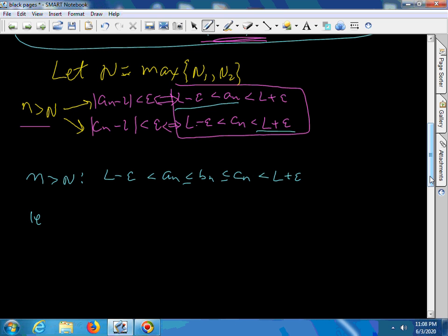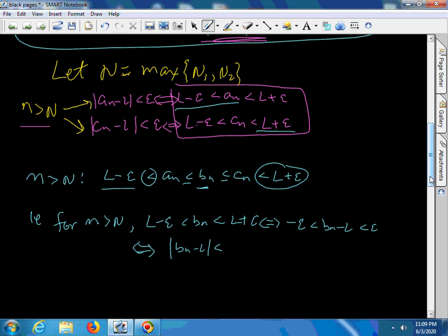That is, for N bigger than capital N, L minus epsilon is strictly less than b sub N, which is less than L plus epsilon. But that is the same as negative epsilon is less than b sub N minus L, which is less than epsilon, which is the same as b sub N minus L in absolute value is less than epsilon.